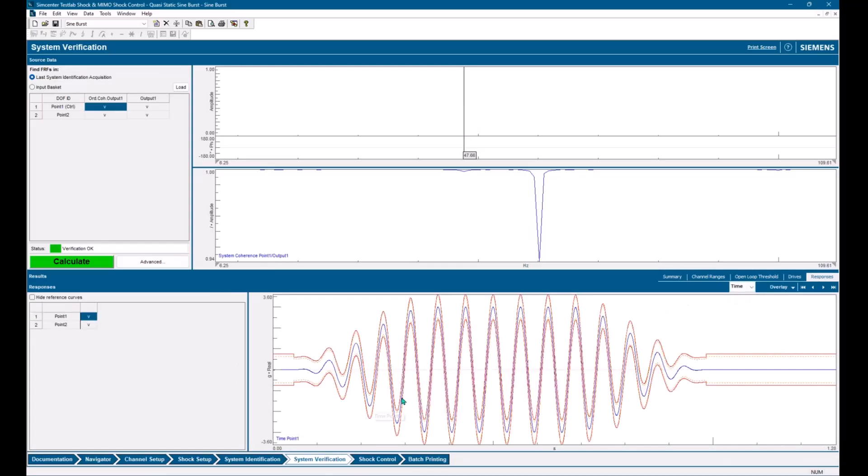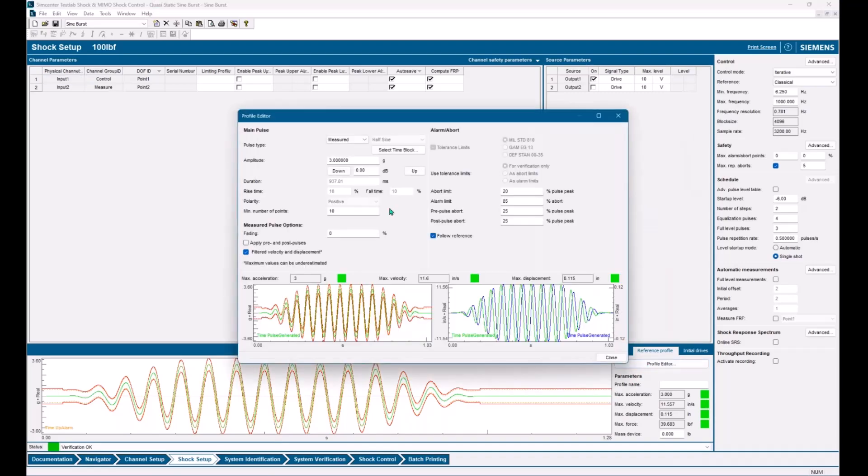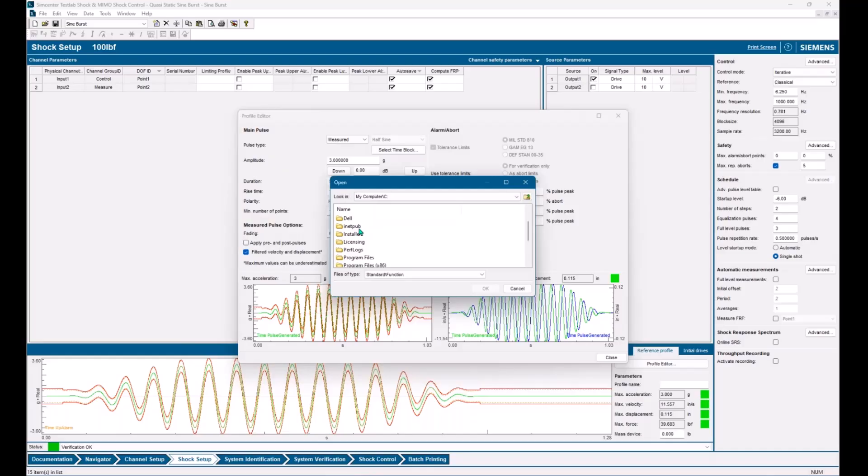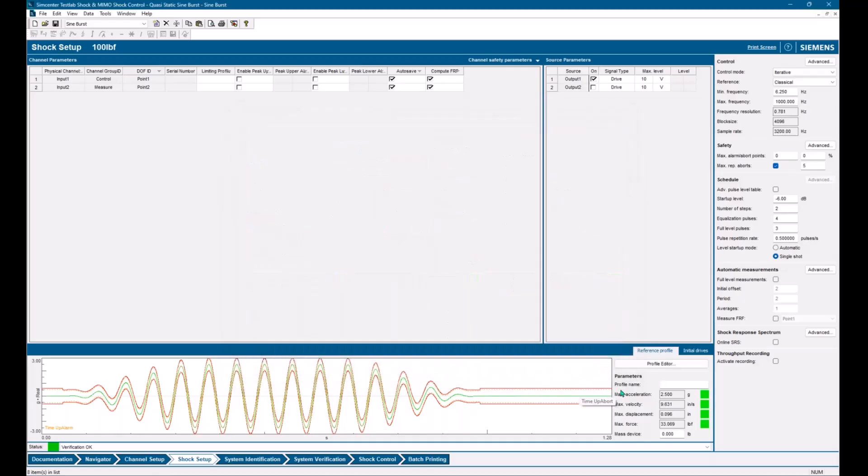All right, we've done our system identification. You can see what our response looks like. And now we can go and run. One last step I wanted to show you here. So to pull in that pulse, you hit measured here and select time block, and then you're going to navigate to where your test is. So I'm here in slap data. So here is our pulse, and then hit OK, and it pulls it in. All right, and you can even scale it right in here. So if I wanted to do a lower amplitude level, it'll rescale it in here as well.